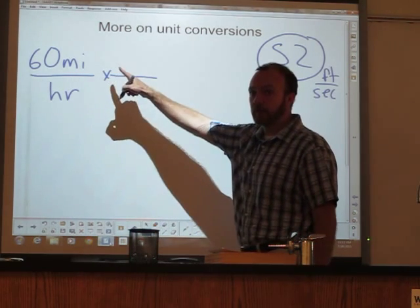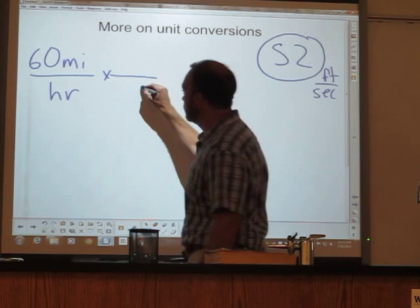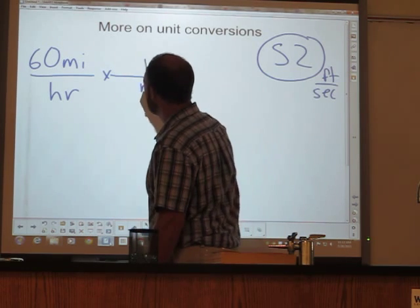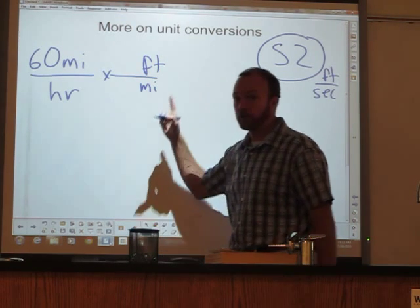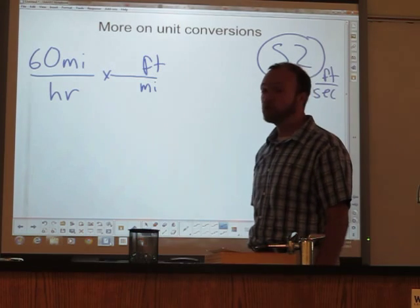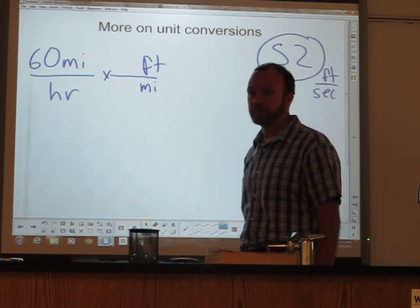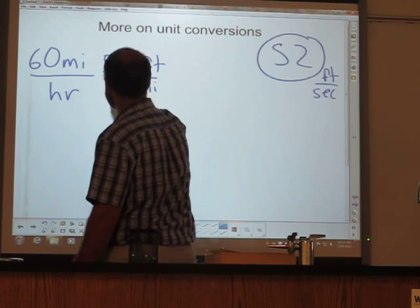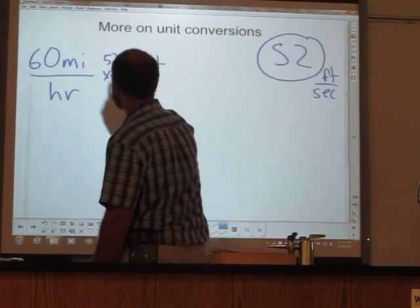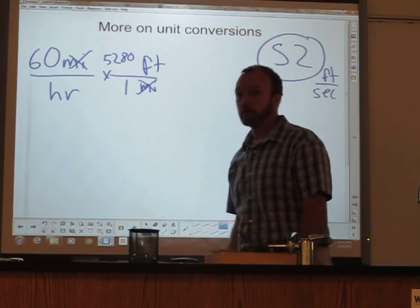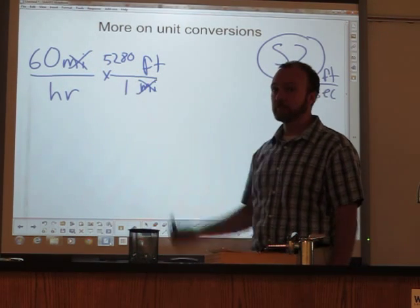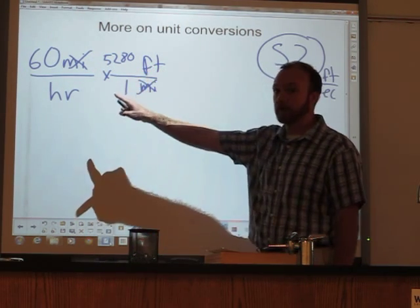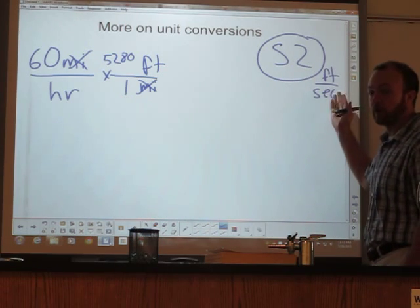To get rid of miles, I'm going to put that on the bottom so it'll cancel. I'm going to switch that to feet. You should know that there are 5,280 feet in a mile. Following my units, miles cancels. I now have feet per hour, getting closer to what I want.